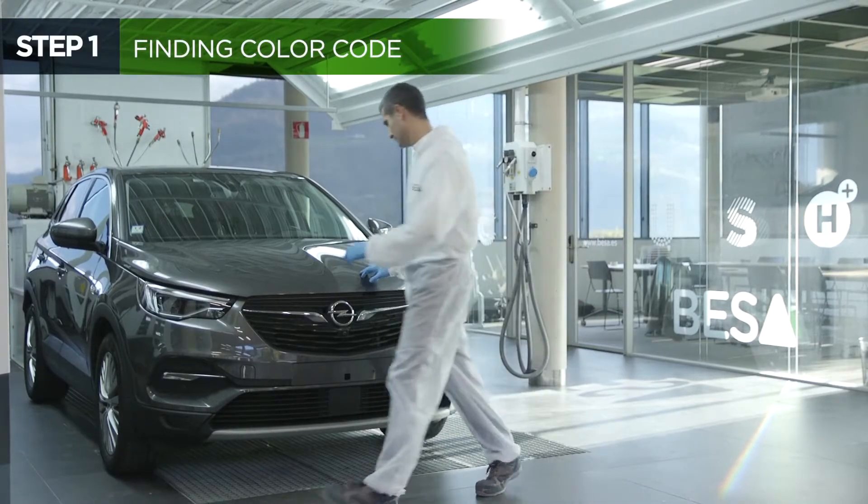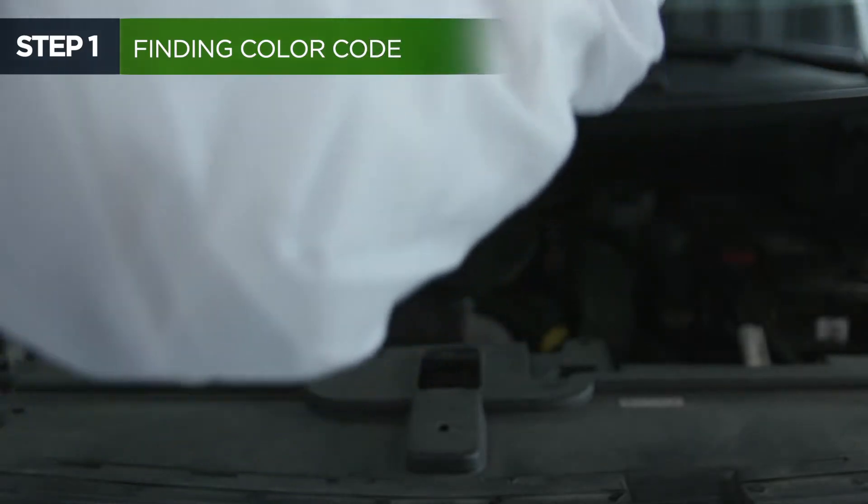The first step is to take the car's color code reference, which depending on the make and model can be found in different parts of the car, such as the trunk, door pillars, or under the hood.